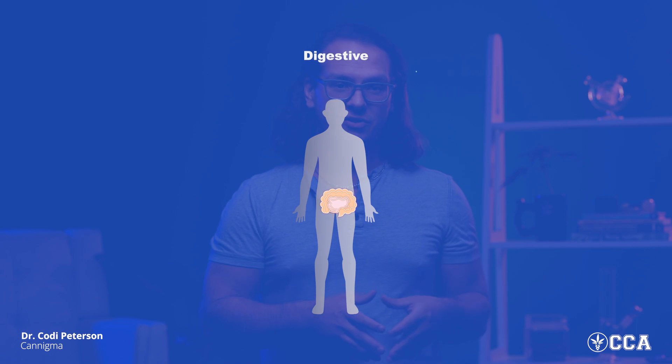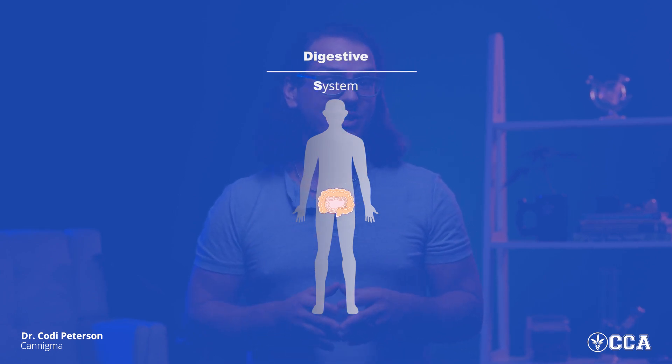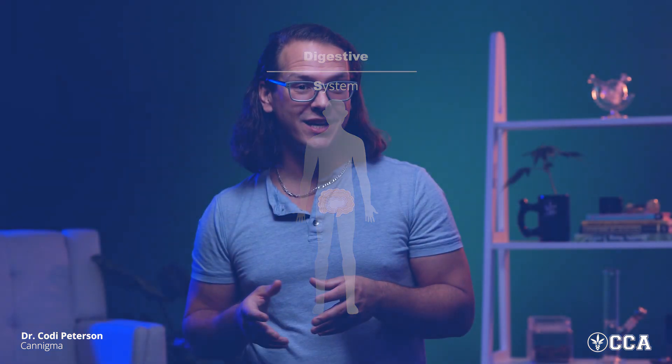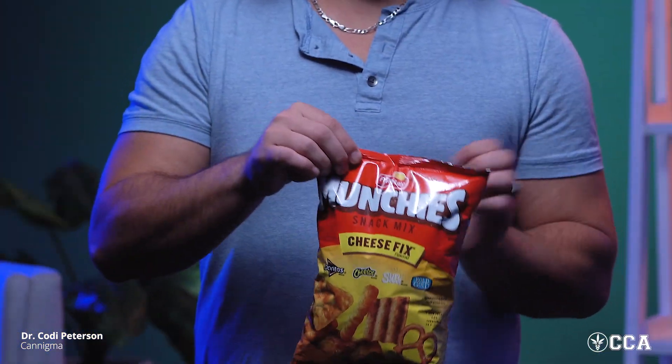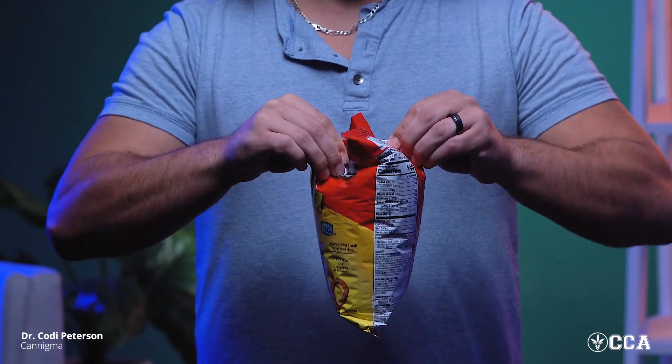Now let's move on to the digestive tract. Anyone who's ever used THC knows there's a clear connection between the stomach and your cannabinoid system — the munchies are a common side effect of consuming THC. This relates to the endocannabinoid system's role in the GI tract. THC can affect your hunger, but it also affects how fast the stomach empties and how fast the small intestines move.